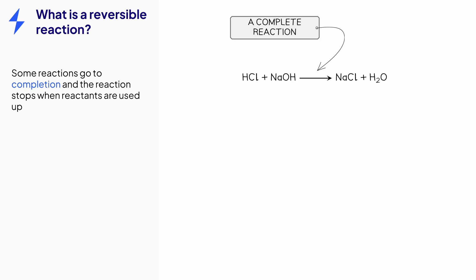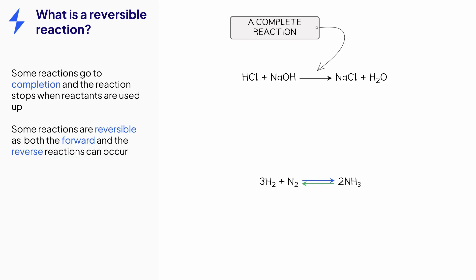Some reactions behave differently. Take the reaction between hydrogen and nitrogen as an example. In this reaction, nitrogen and hydrogen react to produce ammonia. However, some ammonia can reform hydrogen or nitrogen, so both the forward reaction and the reverse reaction can occur. This is known as a reversible reaction.